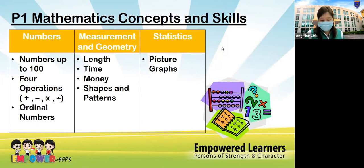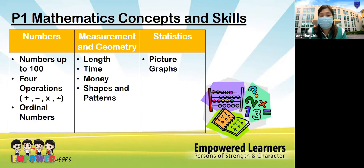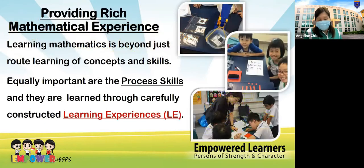In Primary 1, the curriculum covers three broad content strands: numbers, measurement and geometry, and statistics. For numbers: numbers up to 100, four operations (addition, subtraction, multiplication, division), and ordinal numbers. Measurement and geometry covers length, time, money, shapes, and patterns. Statistics introduces picture graphs — a very basic concept of data representation.